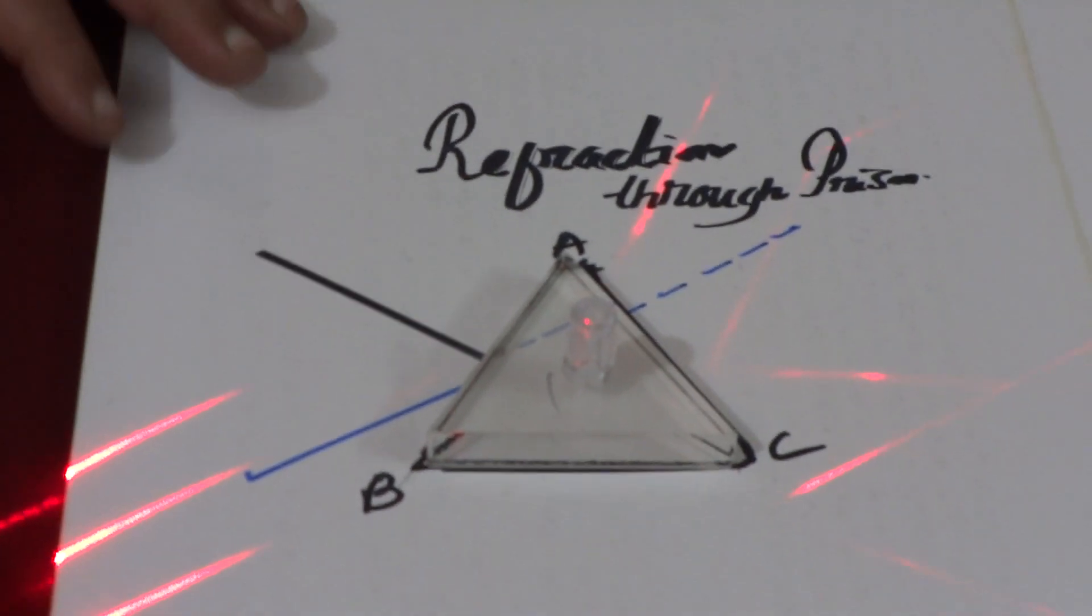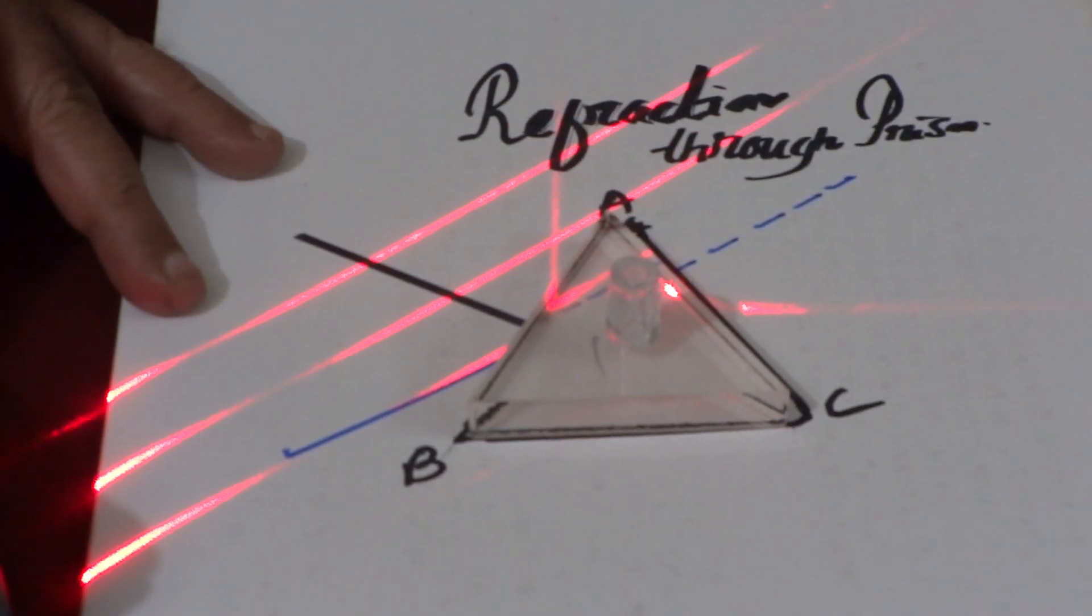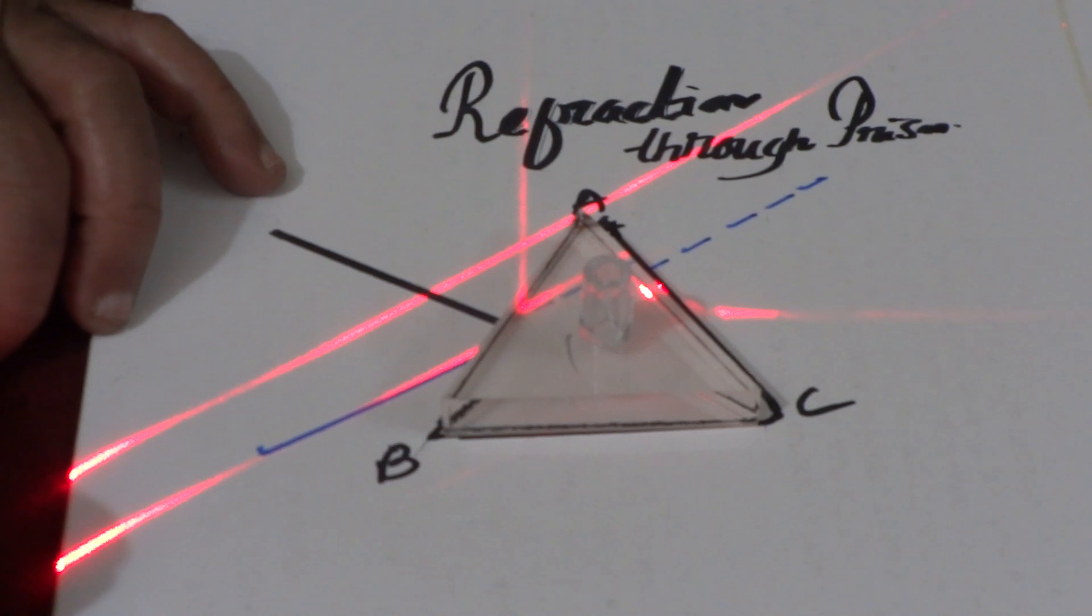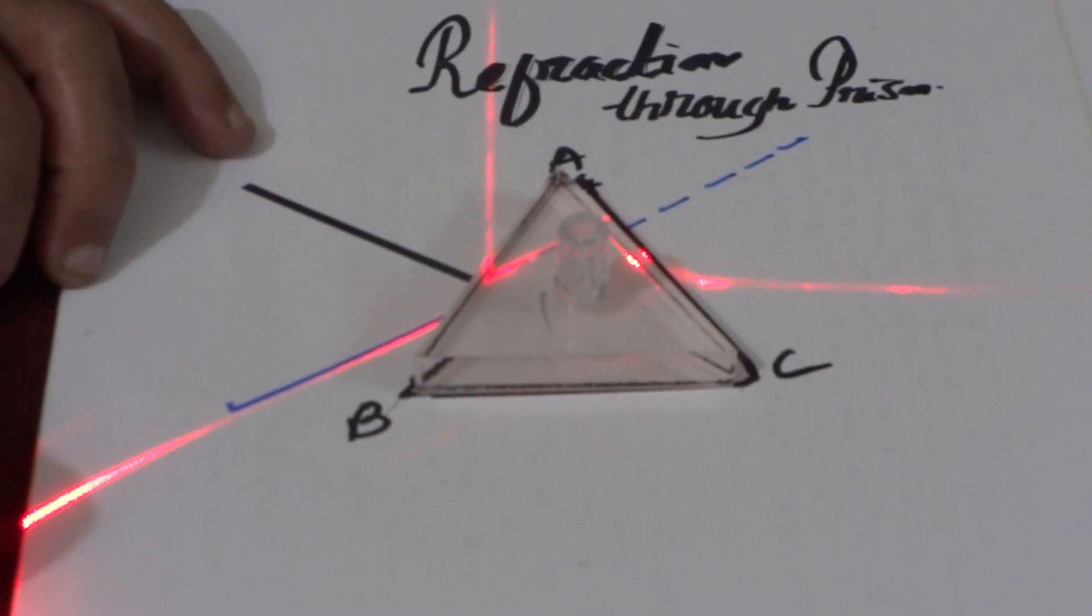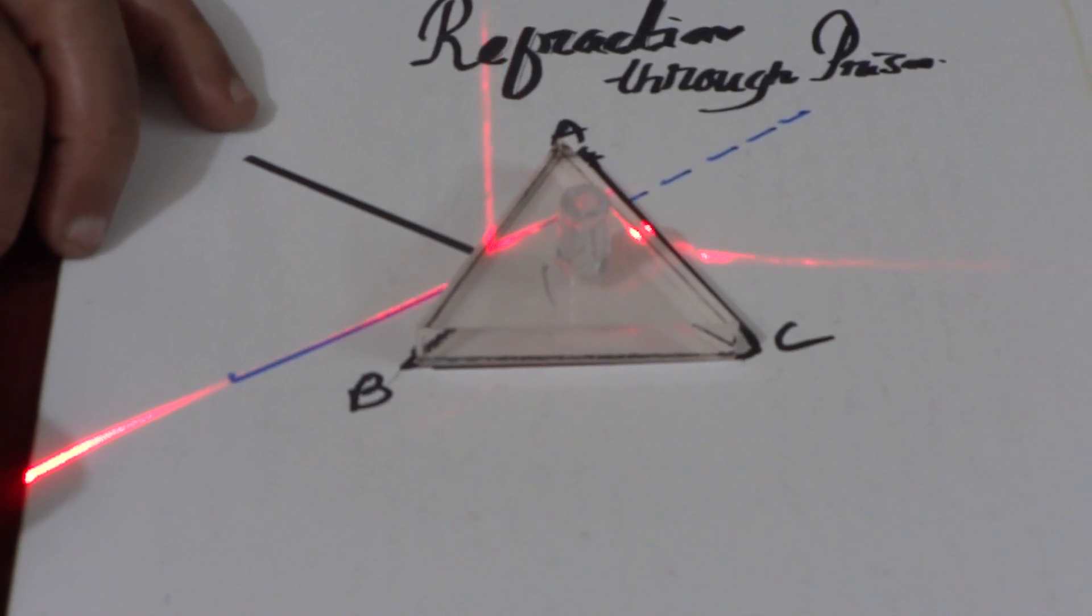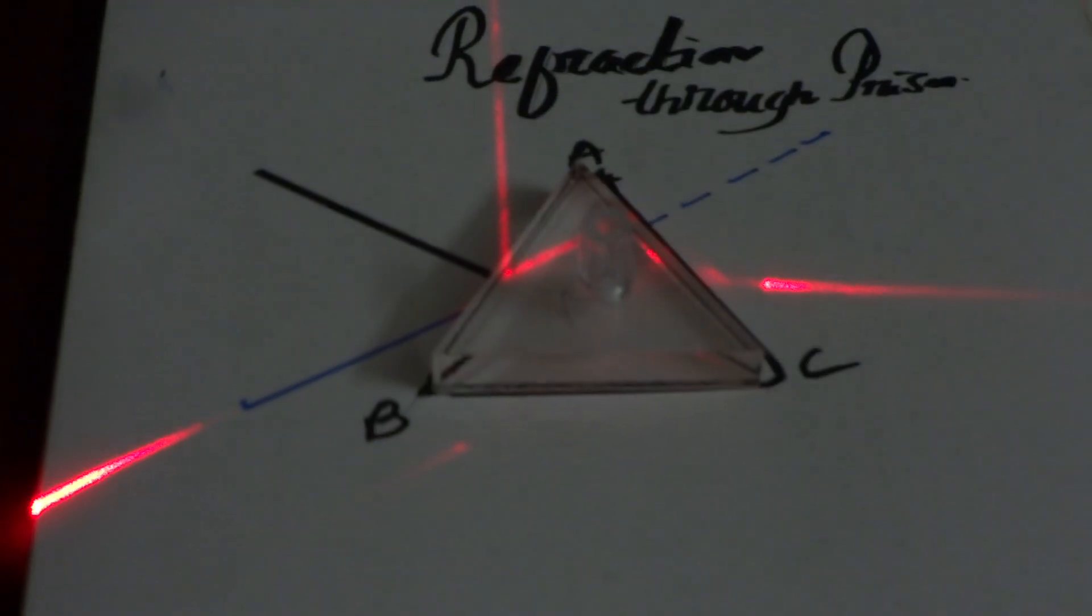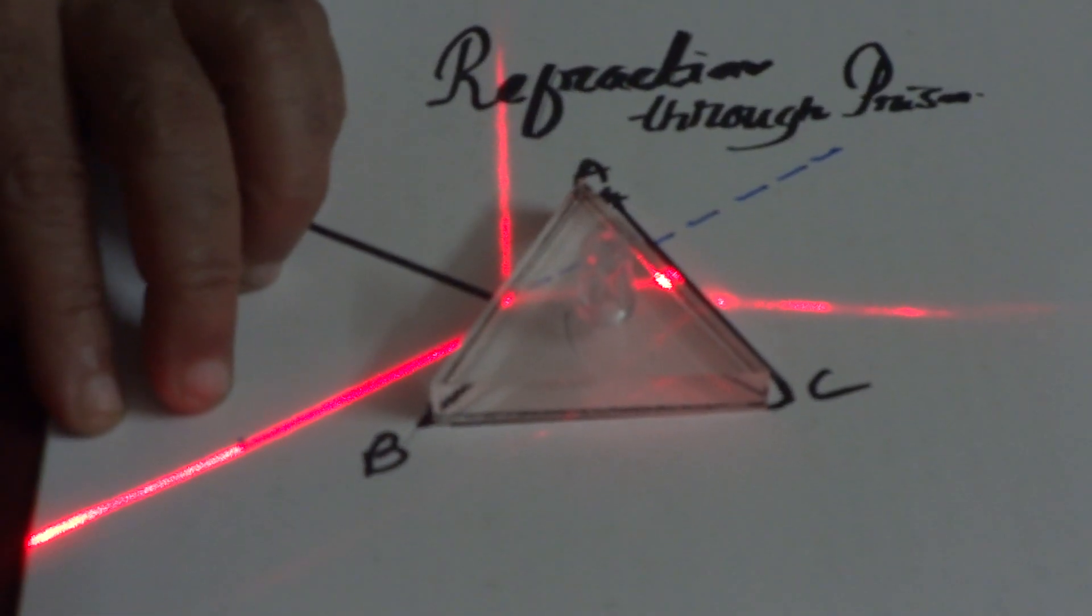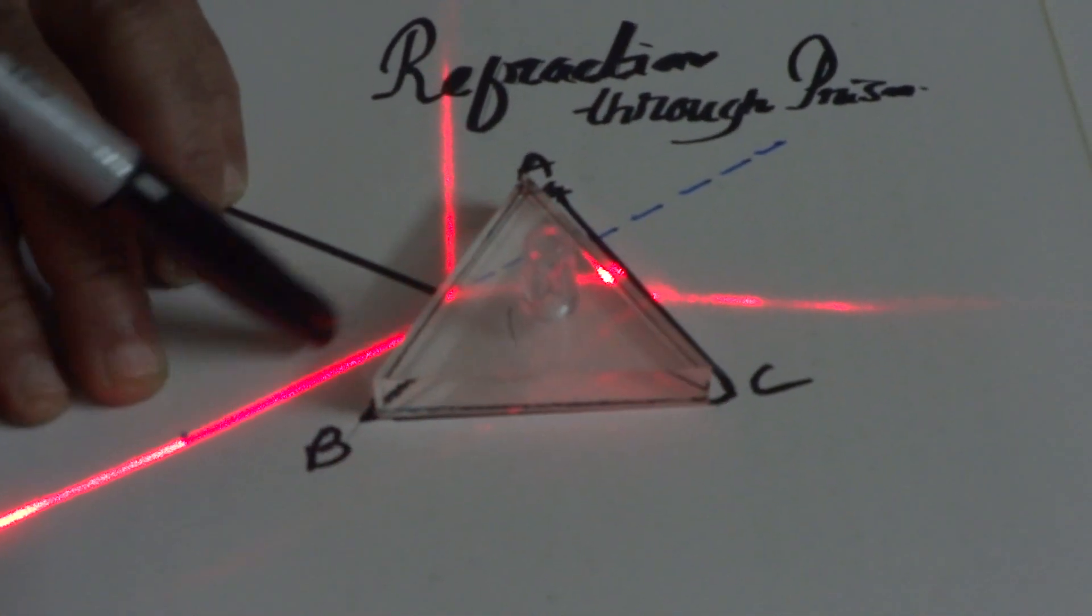If you allow a specific ray, we can see that I have allowed a ray along this blue line.